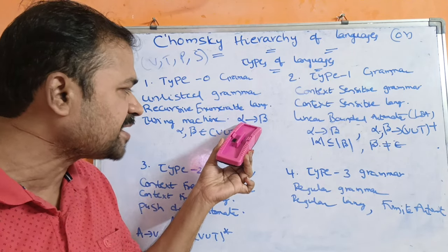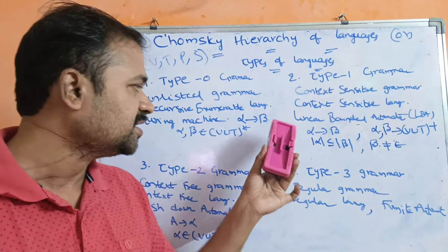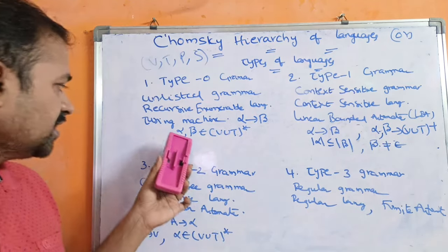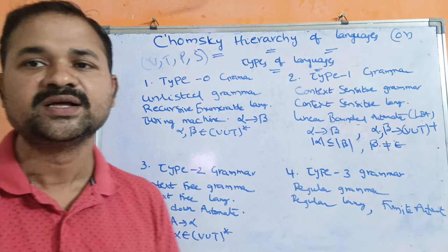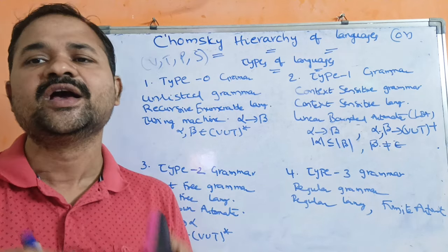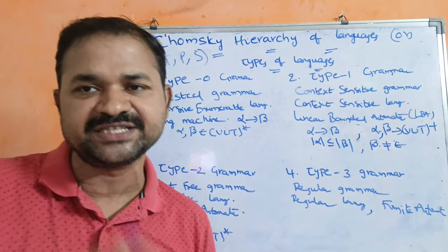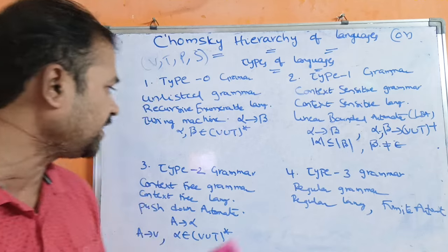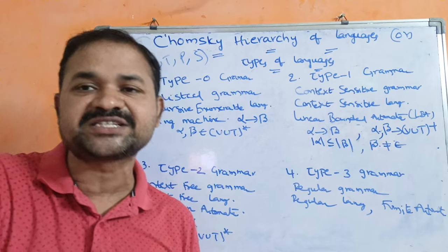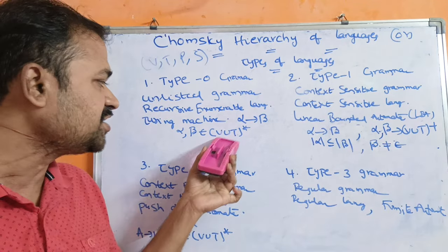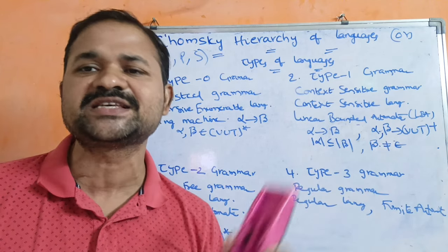Here the productions are represented in the form alpha implies beta, where alpha means left hand side and beta means right hand side of the production. Here alpha and beta belong to (V union T) whole star. That means alpha and beta are any combinations of non-terminals or terminals including zero occurrences, because we use the star symbol. So there is no restriction on the left hand side and right hand side — we can use any number of terminals and non-terminals in LHS and RHS.